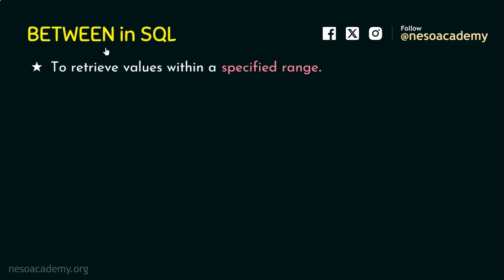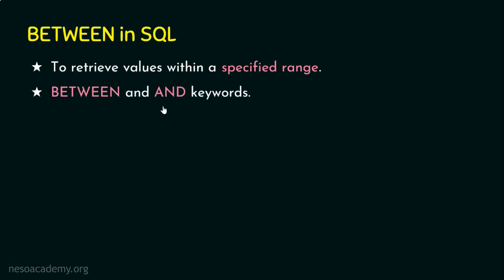The range is specified using the keyword BETWEEN. For example, if we want to list all the numbers between 50 and 70, that means the values from 50 up to 70. So we are going to use the keyword BETWEEN, and the companion keyword with BETWEEN is AND. Whenever we use BETWEEN, the companion is the AND keyword, so whatever values we specify will use BETWEEN and AND.